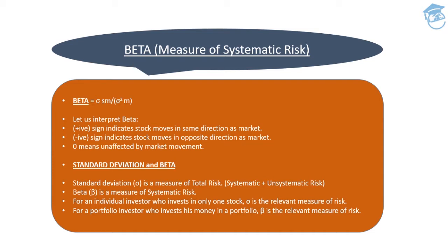Beta can be calculated using the formula: covariance between the security and the market divided by the variance of the market. So it is the covariance between the security and the market, divided by market variance.